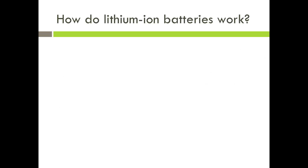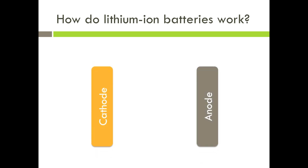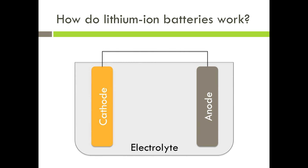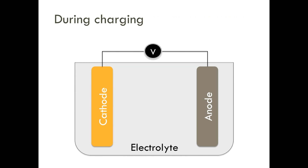So how do lithium-ion batteries work? A lithium-ion battery consists of two electrodes, a cathode and an anode in an electrolyte solution. During charge, an external potential is applied between the two electrodes. When this happens, lithium from the cathode is moved into the anode.